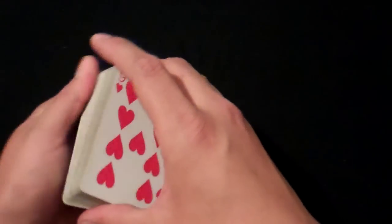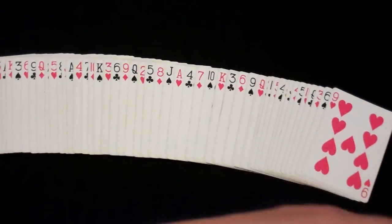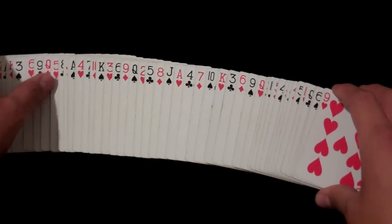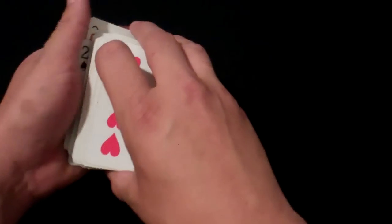You hand the cards to the spectator. You can show them real quick that the cards are all random. You don't want them to actually see the order of the cards, but just kind of flash it real quick.